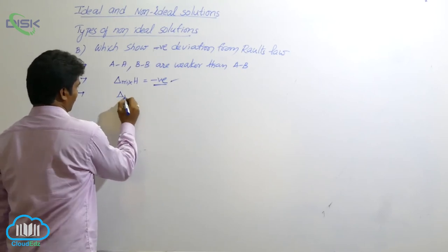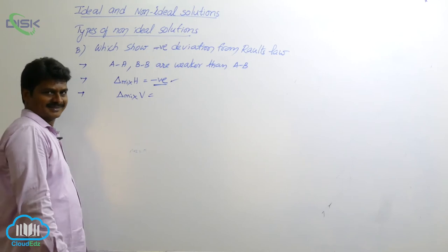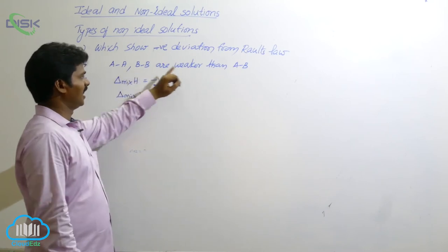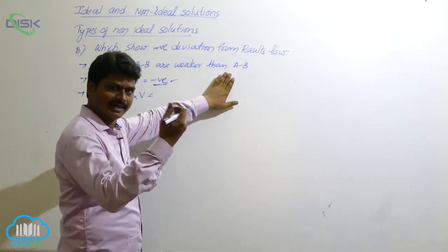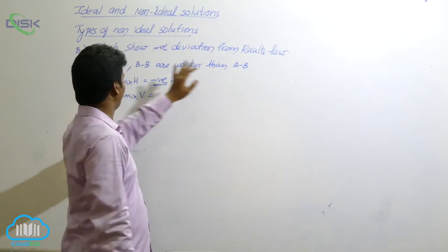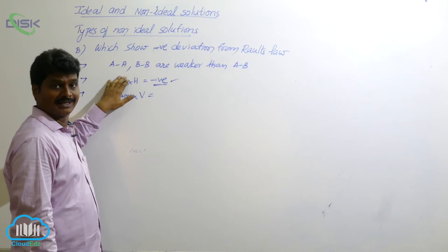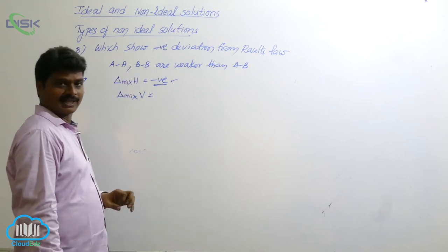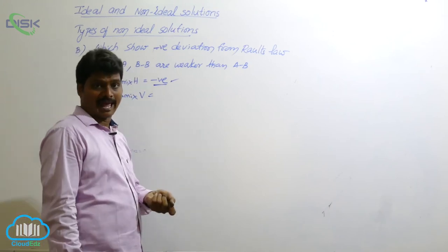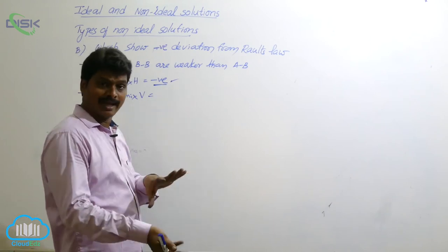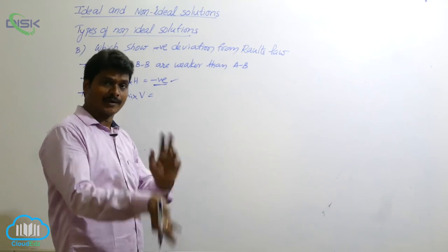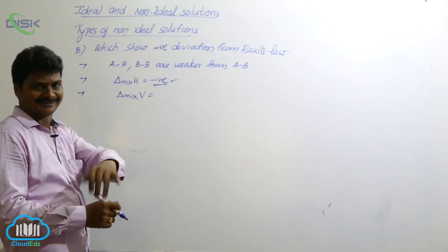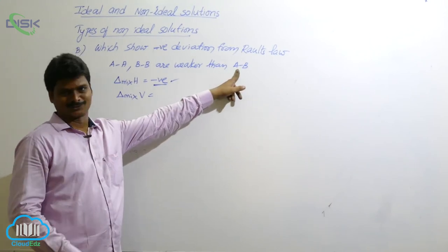Similarly, what about volume of mixing? Here, which interactions are stronger? AB interactions — solute and solvent interactions — are stronger than AA and BB, meaning solute-solute and solvent-solvent interactions. So in pure liquids, molecules have more tendency to escape. In pure A, more tendency to escape; in pure B, more tendency to escape. But when A and B are mixed, the tendency of escaping decreases.